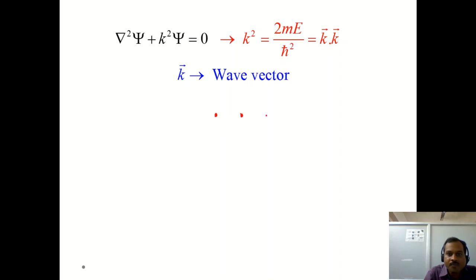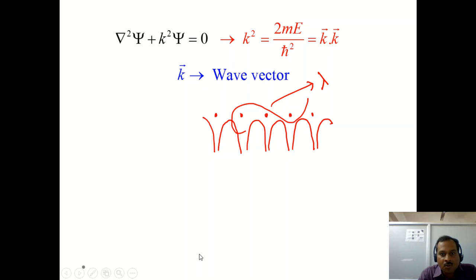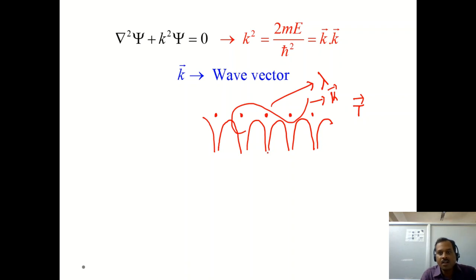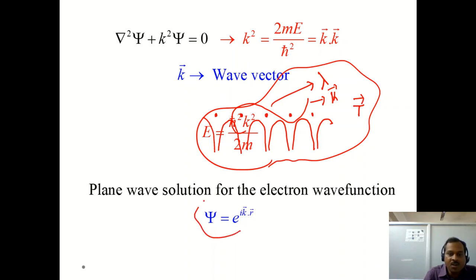If we draw a pictorial representation in one dimension, we have ions and the associated potential surrounding them. The electron wave moves inside this with wavelength lambda, inside this periodic potential which was completely ignored in the Drude-Sommerfeld theory. The wave vector k has some periodicity with the lattice translational vector t. When we consider the motion of electrons in a periodic potential, we will see how the plane wave solution is going to be modified.